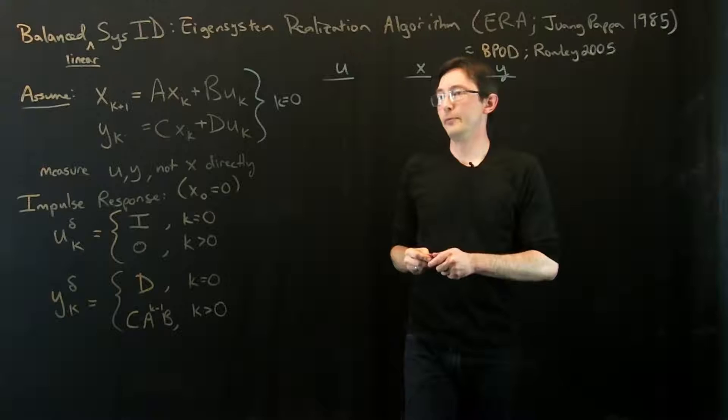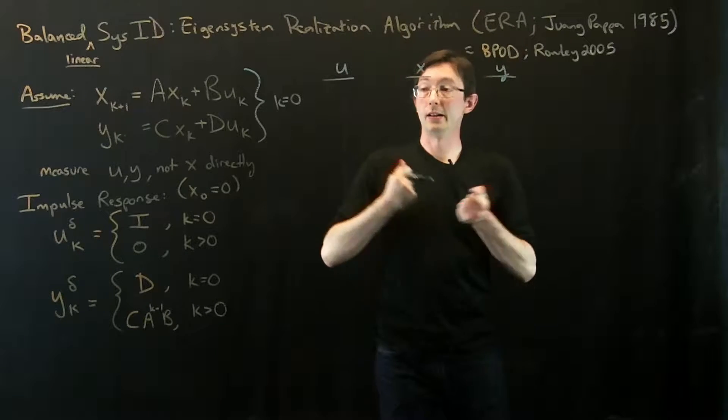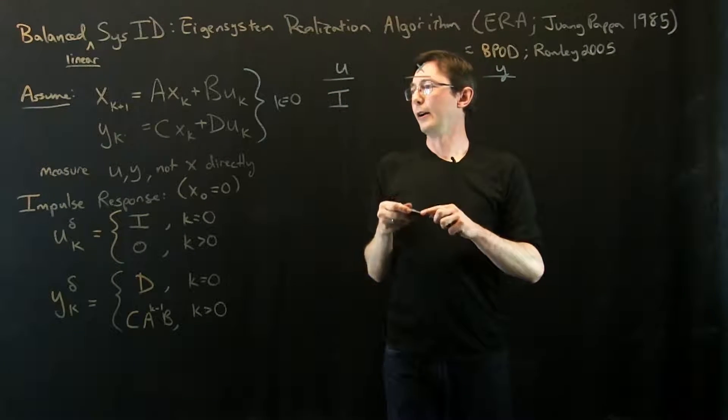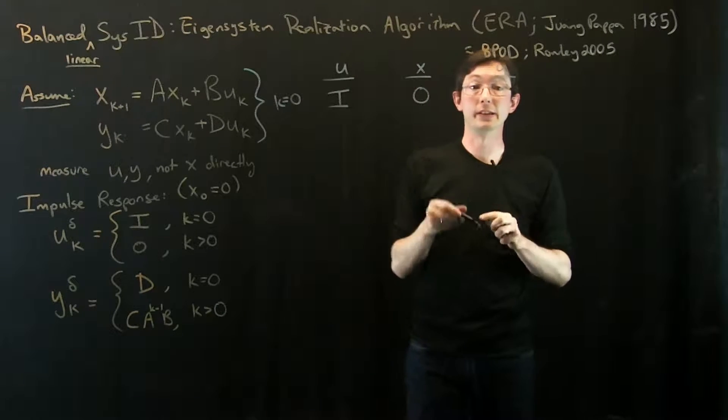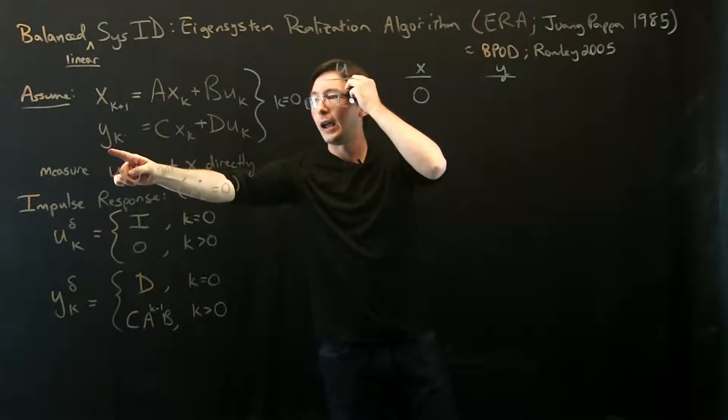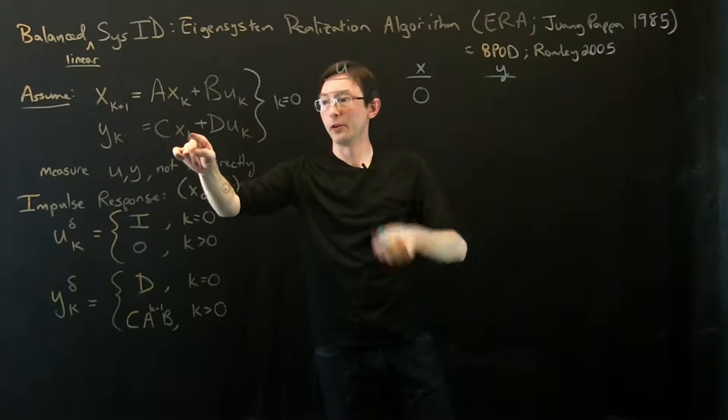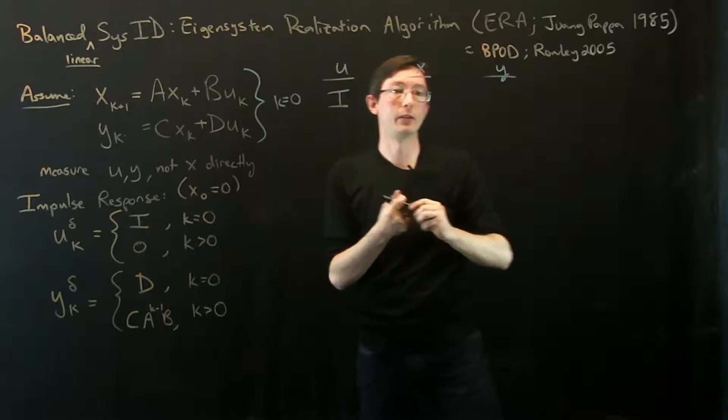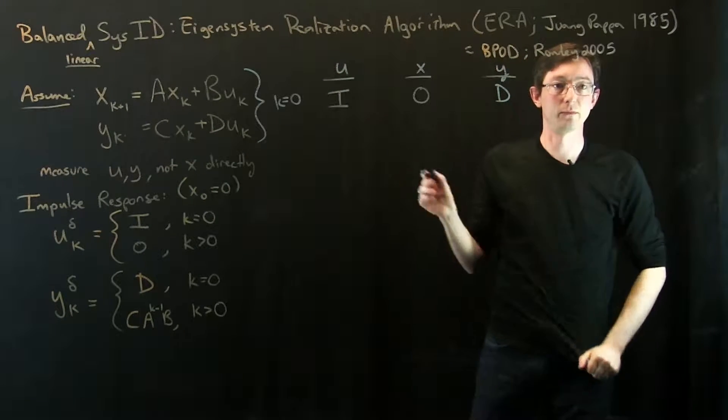At k equals 0, u is equal to the identity. We assumed 0 initial conditions, so x is equal to 0, and y is equal to C times 0 plus D times I. So y is equal to the D matrix. Pretty simple.